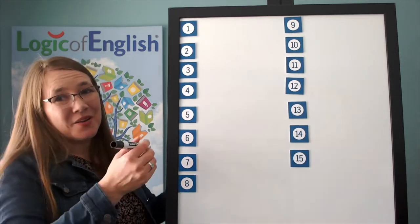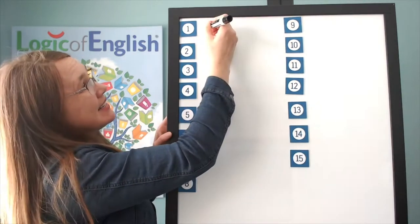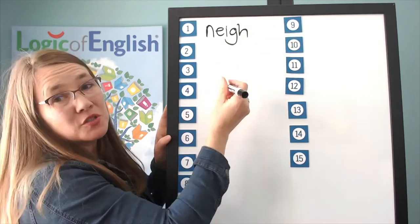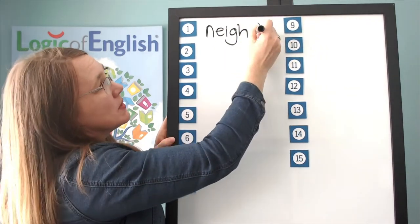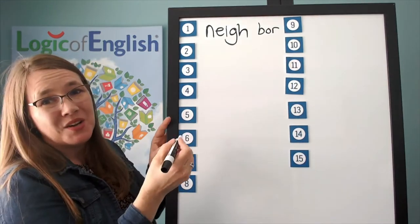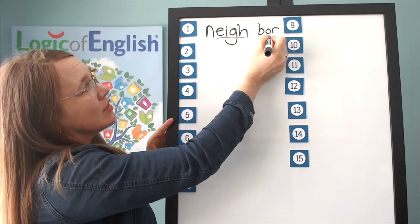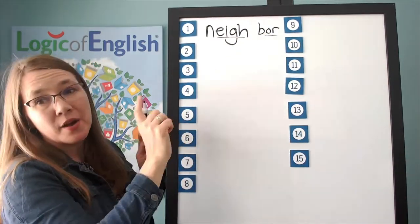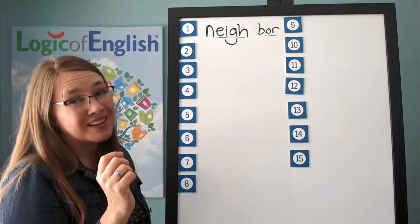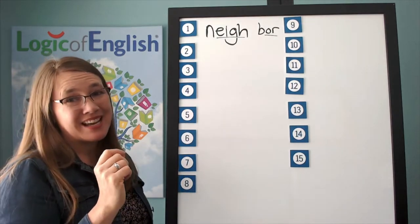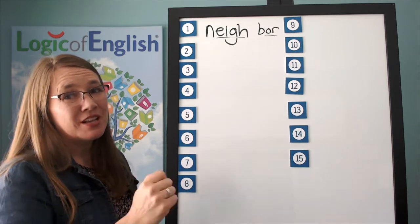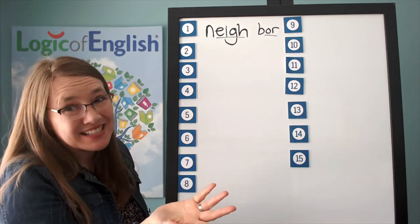Good sounding it out. Now help me to write it. Nay — N-ay. Second syllable is bore — B-or. And how will we mark it? Underline the A and the OR. Why did the OR sound like ER in neighbor? O-R and A-R may say their schwa sounds ER in an unstressed syllable. So it's just saying its lazy sound.